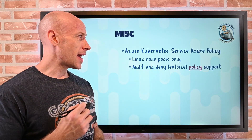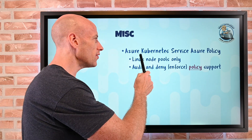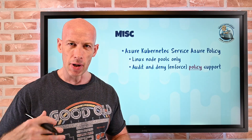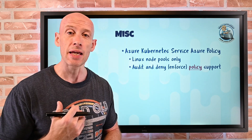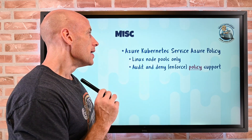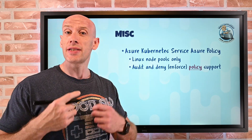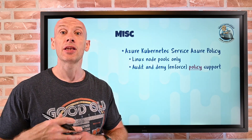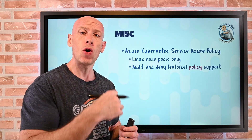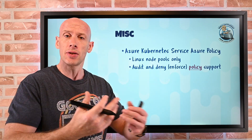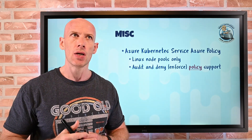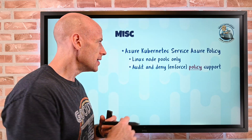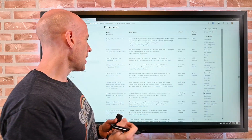Azure Kubernetes Service now supports Azure Policy — this is in preview, and it's only for Linux node pools because it uses Linux capabilities to do enforcement, sitting between deployments and the actual API service. You can run this in audit mode — just report violations — or in actual deny/enforce mode. There's a whole set of policies around deploying GitOps, pointing at a GitHub repository to automatically make published files a reality of your Kubernetes cluster, eliminating privileged containers, or enforcing HTTPS only.